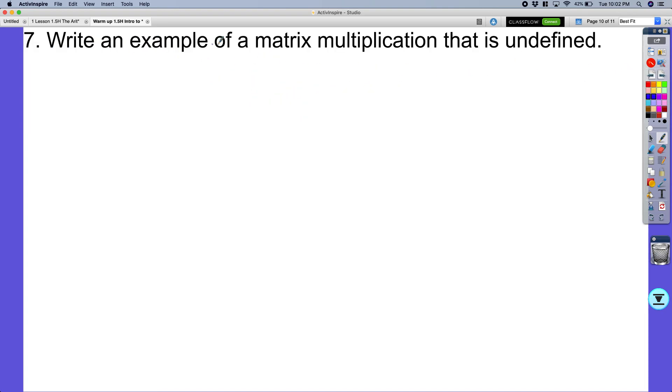So if I wanted to write an example of a matrix of multiplication that would be undefined. If I had something like 3 times 2, and then I'm going to multiply that by a number times any value. This number cannot equal 2.